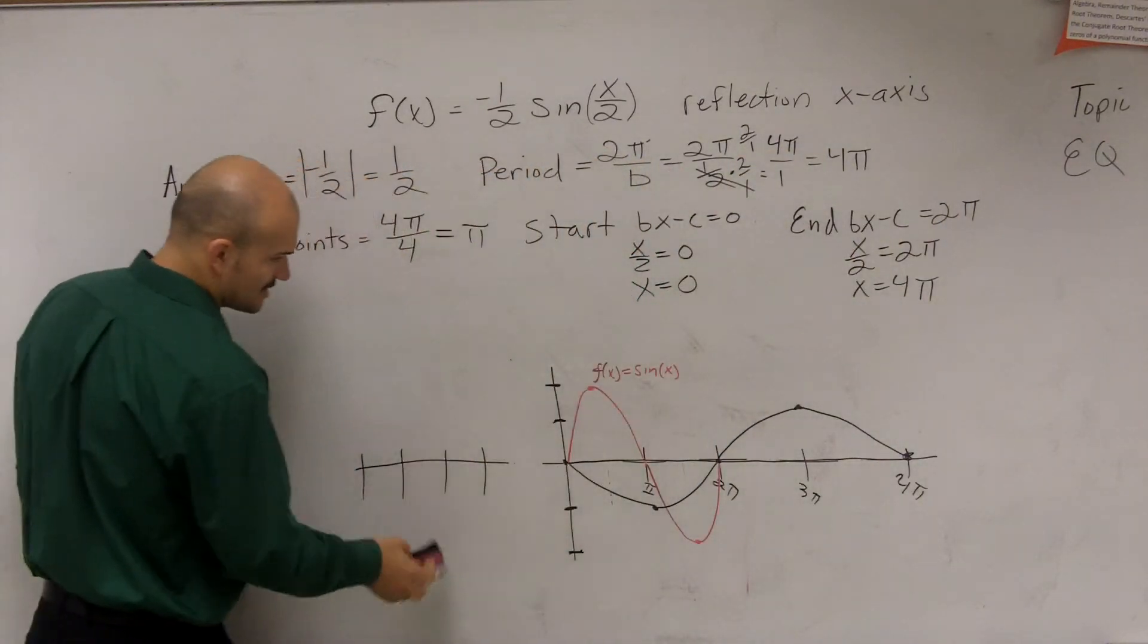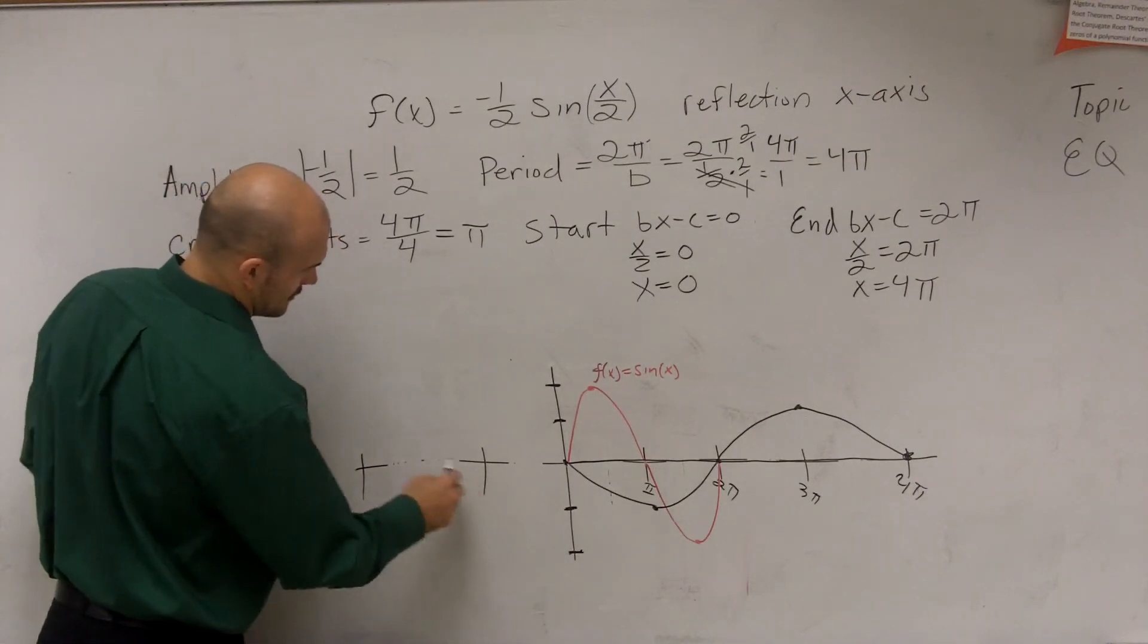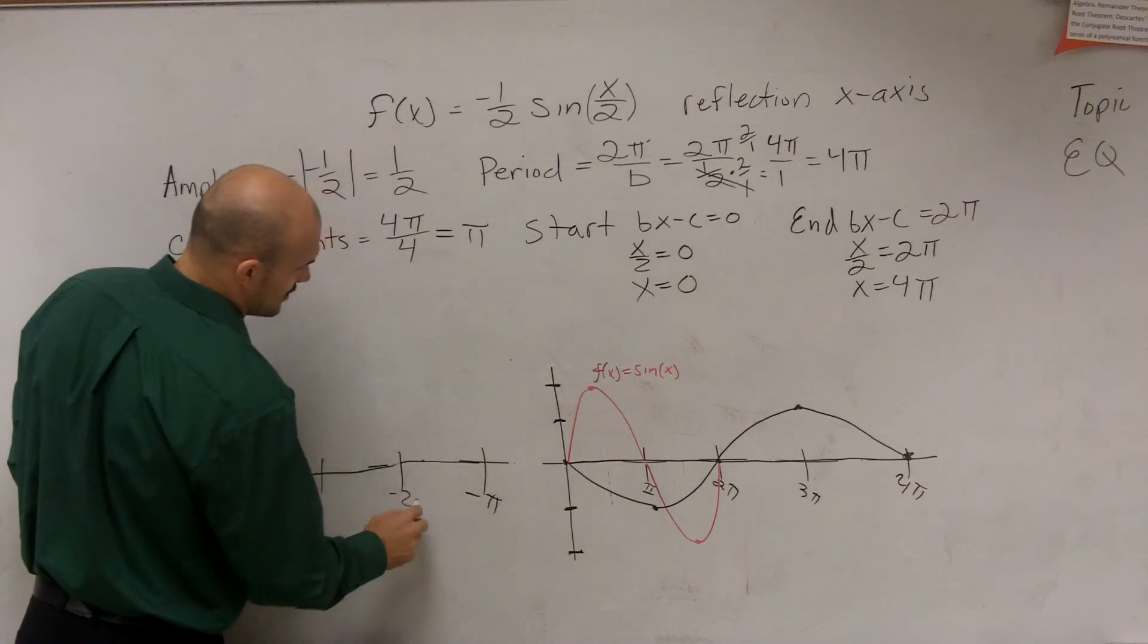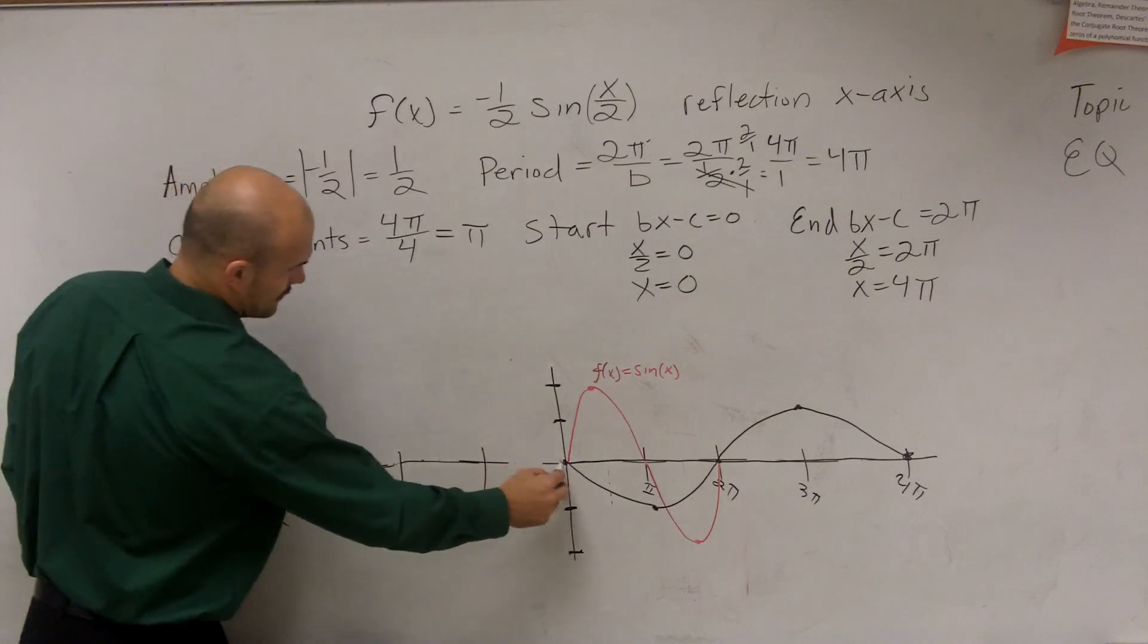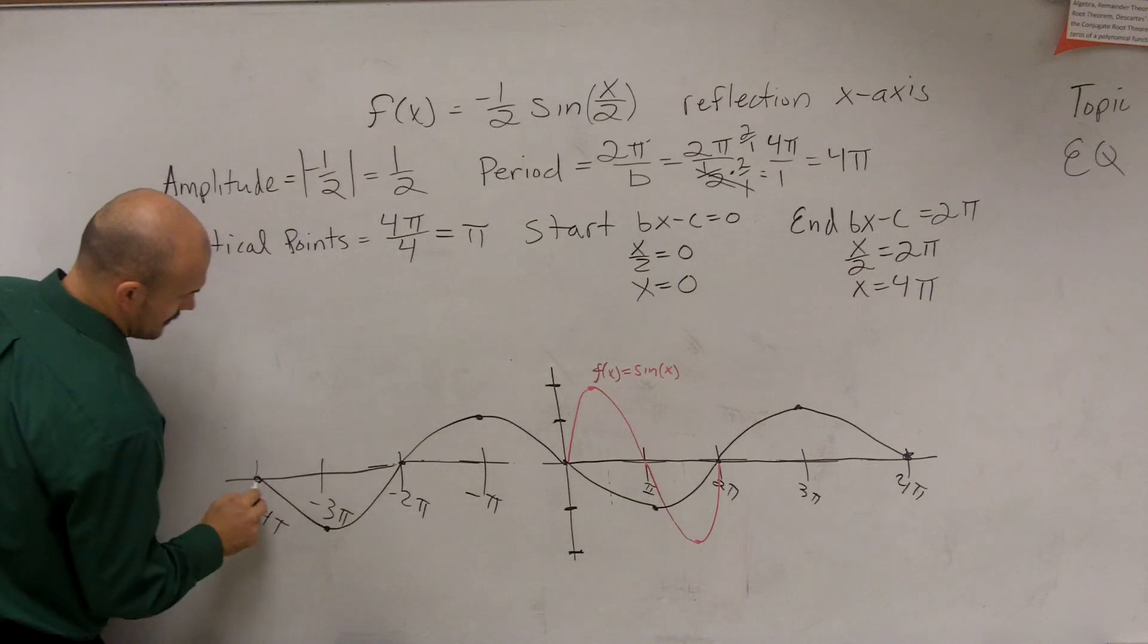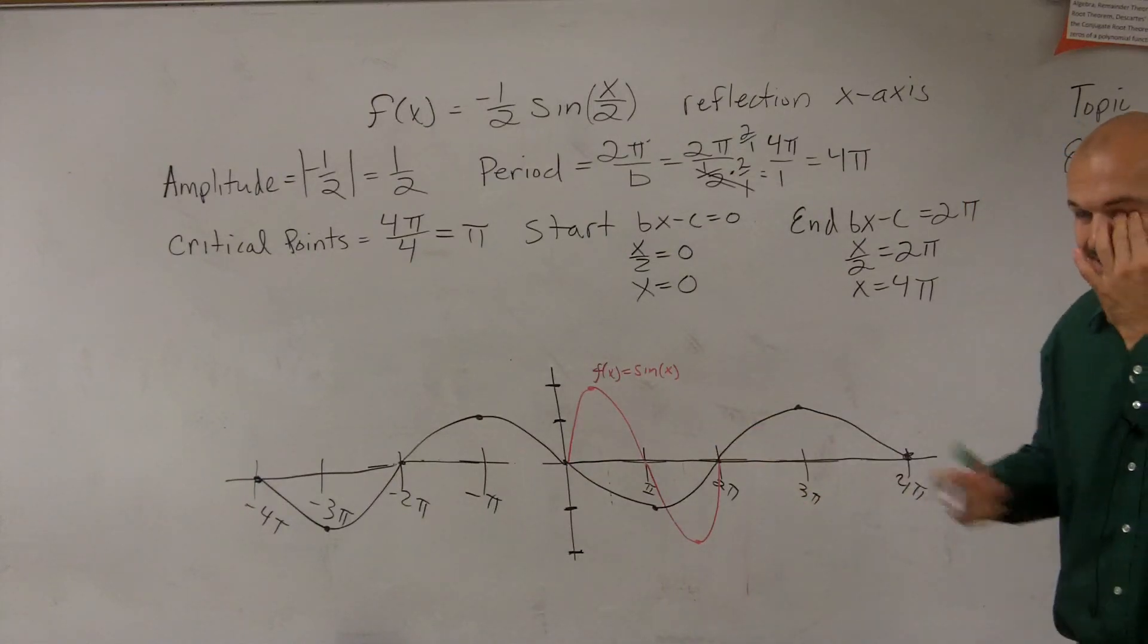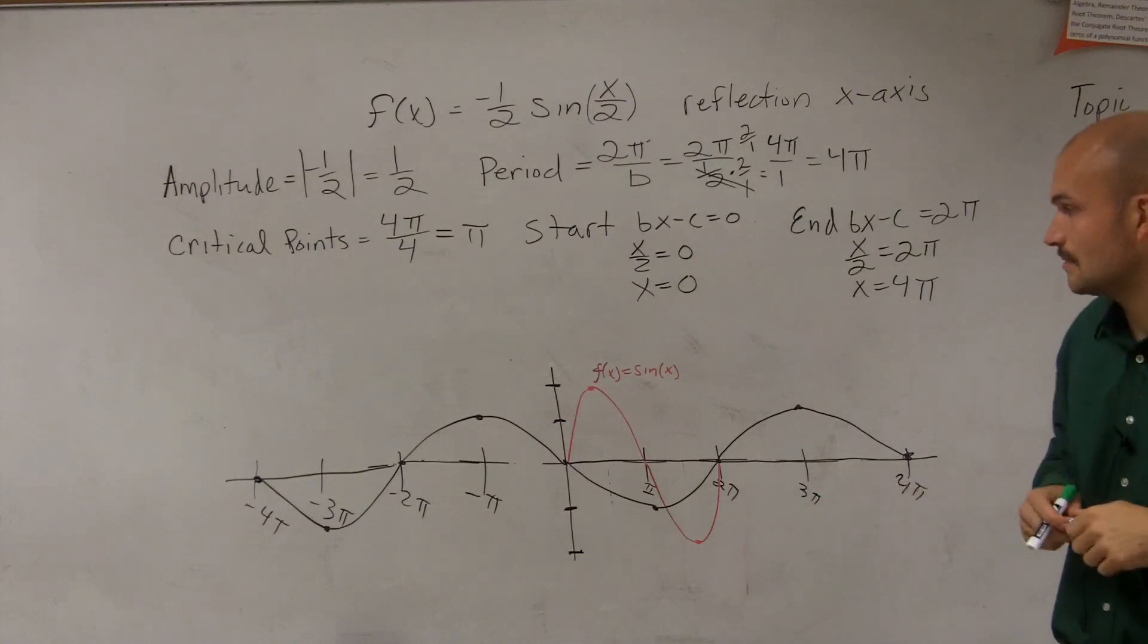And then what I'll do is I'll also just increase this going in the negative direction. So therefore, this is negative π, negative 2π, negative 3π, negative 4π. And there you go. There's how I've now graphed the function with two complete periods. It looks a little rough on that side over there, but do you guys can see it? Any questions on what I did? Nothing? Okay.